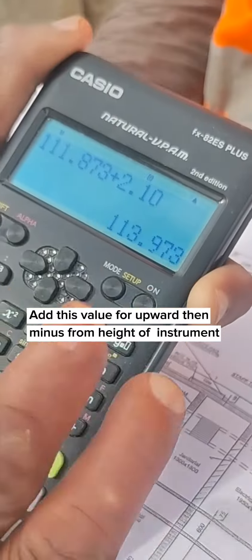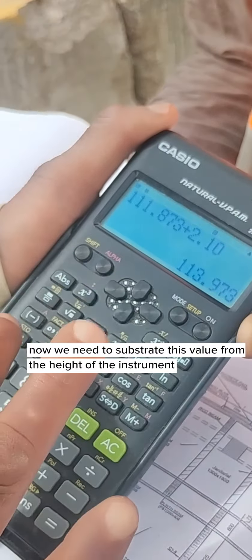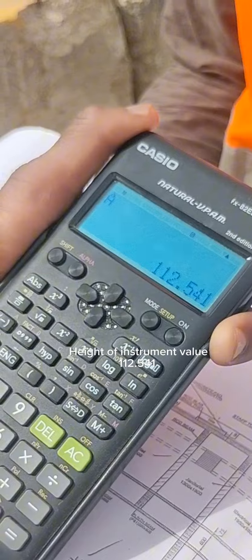Add this value for upward, then minus from height of instrument. Now we need to subtract this value from the height of the instrument. Height of instrument value 12.541.